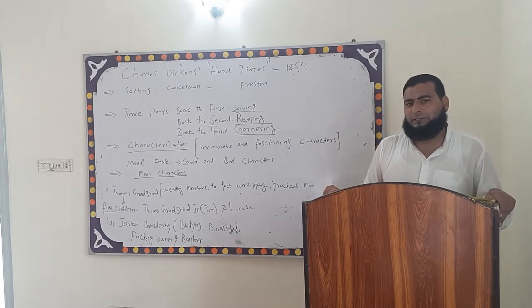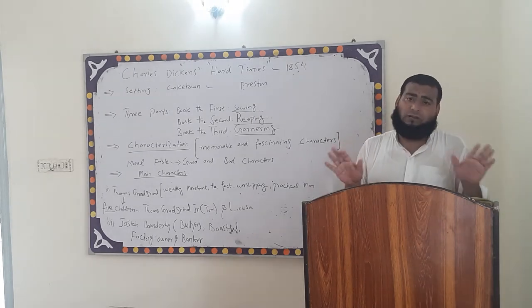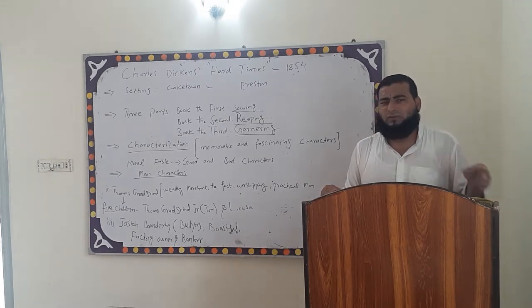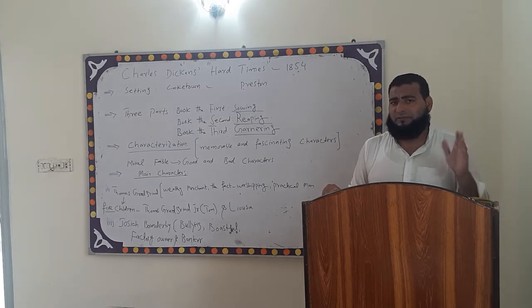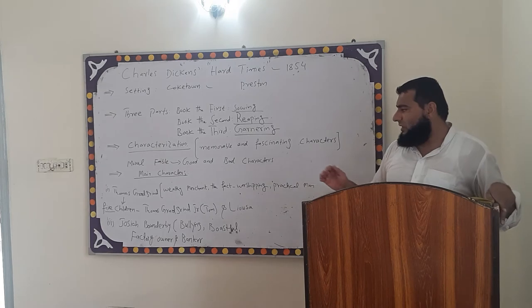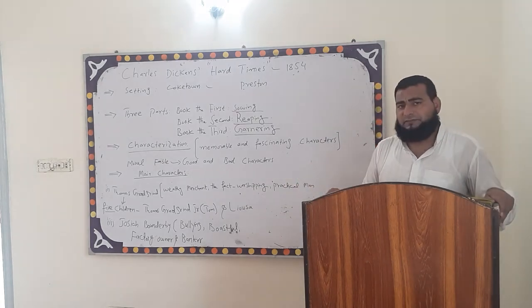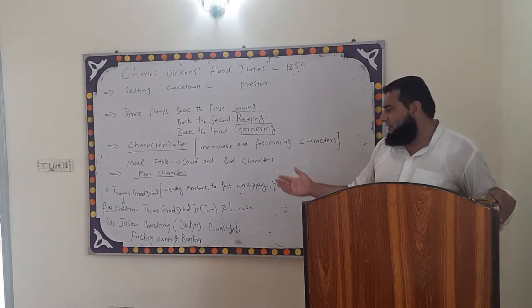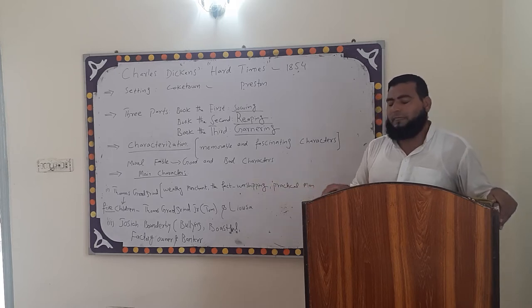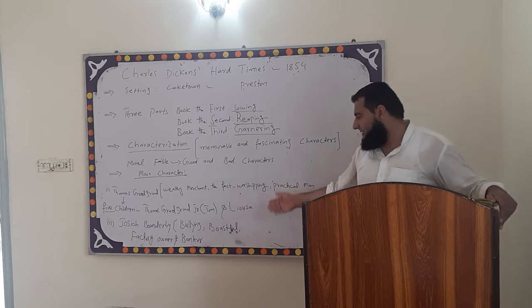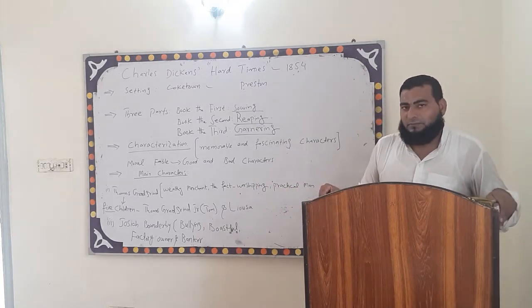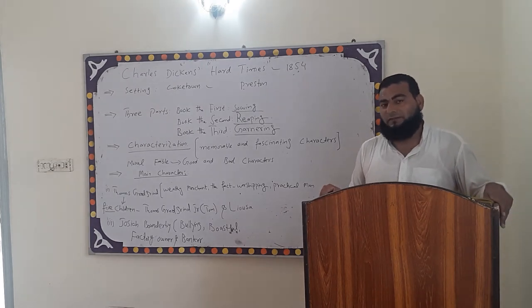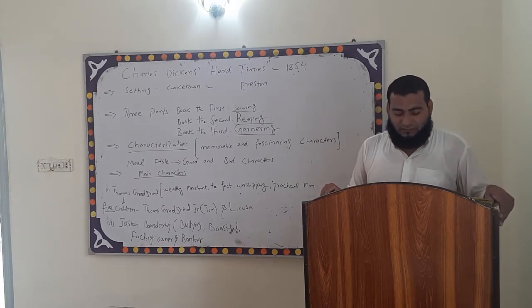His own children — Tom and Louisa — are also taught there in this very school along with other children, in a very strict environment following strict rules with no talk about feeling or emotion, all about facts and statistics. He has five children, but the two main ones who play an important role in the novel are Thomas Greg Bryant Junior, basically known as Tom, and his daughter Louisa.